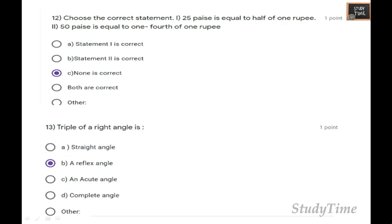Next, choose the correct statement. 25 paise is equal to half of 1, or 50 paise is equal to one-fourth of 1. Here both are wrong, so the answer is none is correct. Triple of a right angle: right angle is 90 degrees. When it is tripled you will be getting 270 degrees. 270 is a reflex angle.